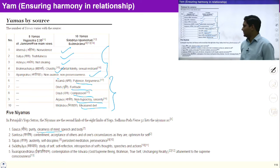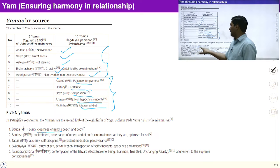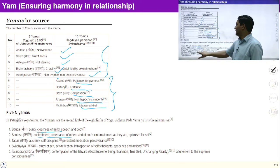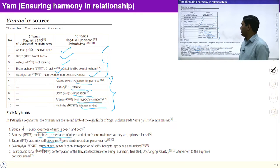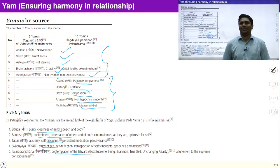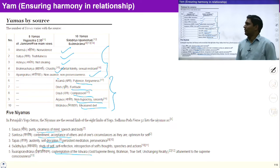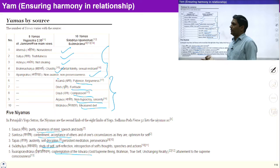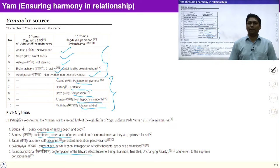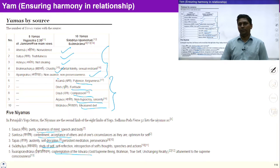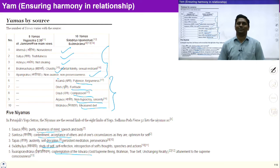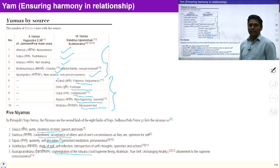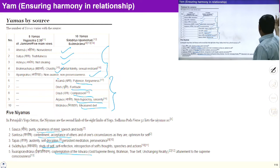Then we will discuss niyams: cleanliness of mind, contentment, self-discipline, study of self, and contemplation of the Ishwar — God. If we study these two sets in detail, we will be able to live in harmony within myself and harmony in relationship. Let's start and try to understand one by one.